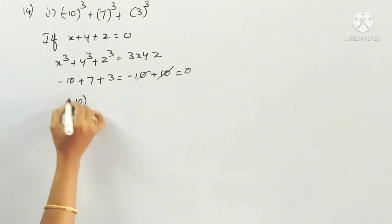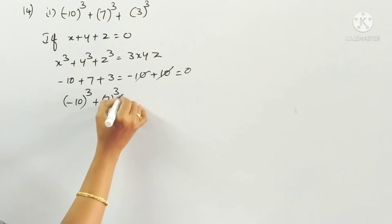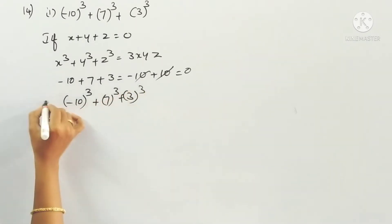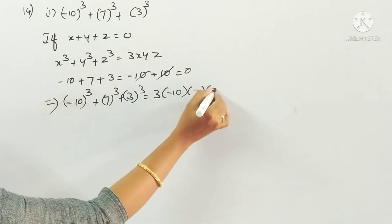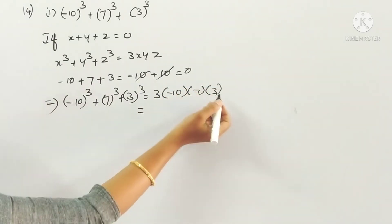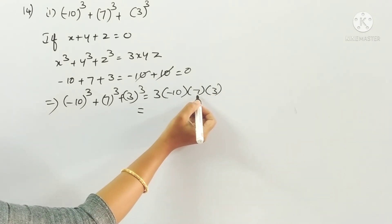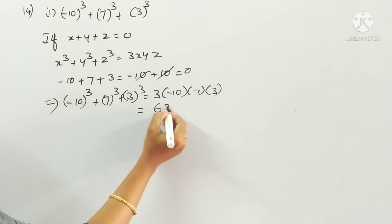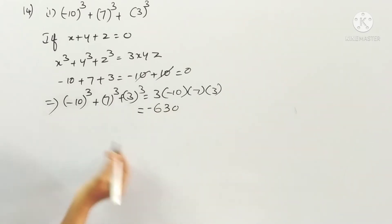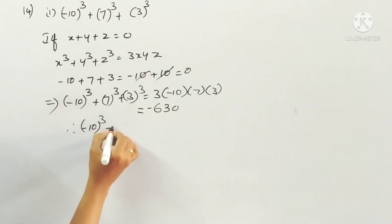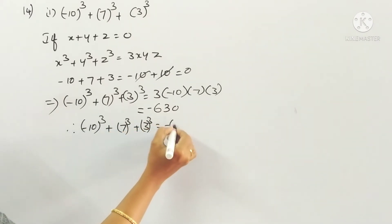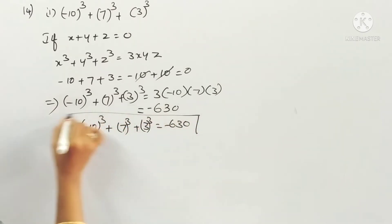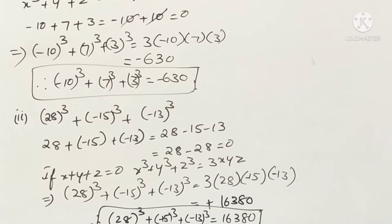So (minus 10) cube plus 7 cube plus 3 cube equals 3 times (minus 10) times 7 times 3. Calculating: 3 times 7 is 21, times 3 is 63, times 10 is 630, with a minus sign. So the answer is minus 630.